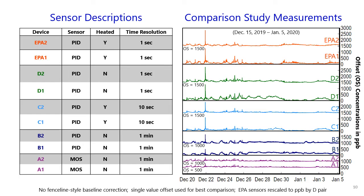Some of the specifications of the sensors in this study are listed on the left. The sensors have different sampling intervals, with the fastest being the EPA and D sensors that collect data each second, whereas the A and B pairs collect data each minute. Also, only some of the sensors are heated, which means they are less susceptible to condensation or changes in temperature or relative humidity. The graph on the right shows measurements for the complete data set of sensor pairs throughout the study. Some offsets were introduced for visualization. Our temporal baseline correction had not yet been applied at this point, and sensors are grouped by pairs shown in these colors throughout the presentation.